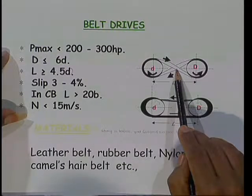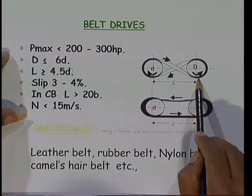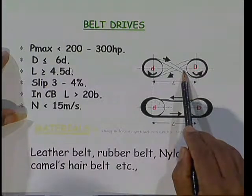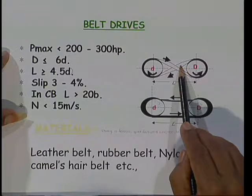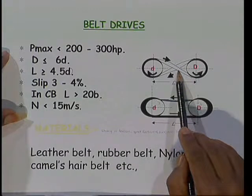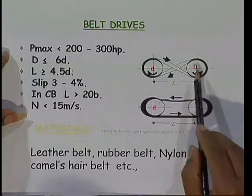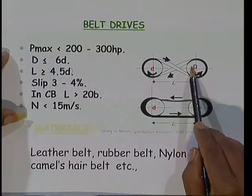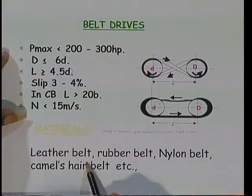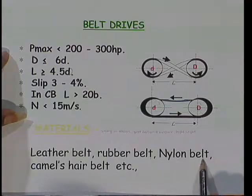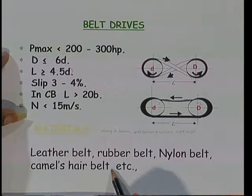If we require the motor pulley and load pulley to rotate in opposite directions, we connect the belt in a cross arrangement — called a cross belt arrangement. In this case, the length between the two pulleys should be greater than 20b, where b is the width of the belt. The speed should be less than 15 meters per second. Generally, this type of belt arrangement can transmit power from 200 to 300 hp. Belt materials are generally strong in tension, have good frictional surface, and are light in weight. Belt materials used include leather belt, rubber belt, nylon belt, and sometimes camel's hair belt.